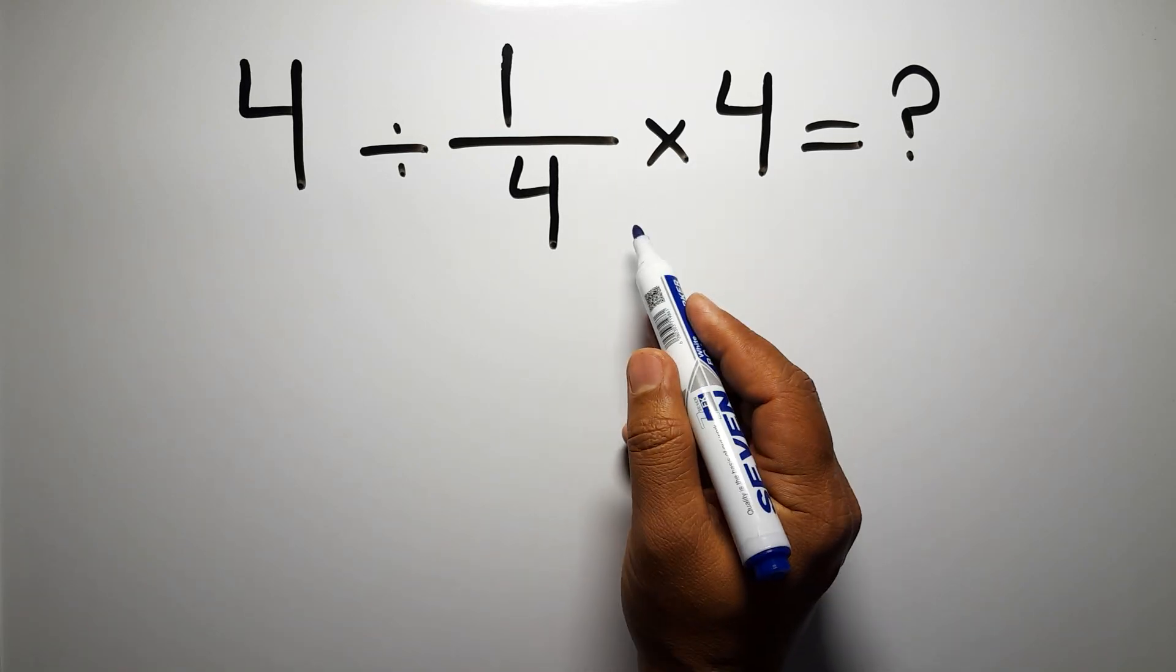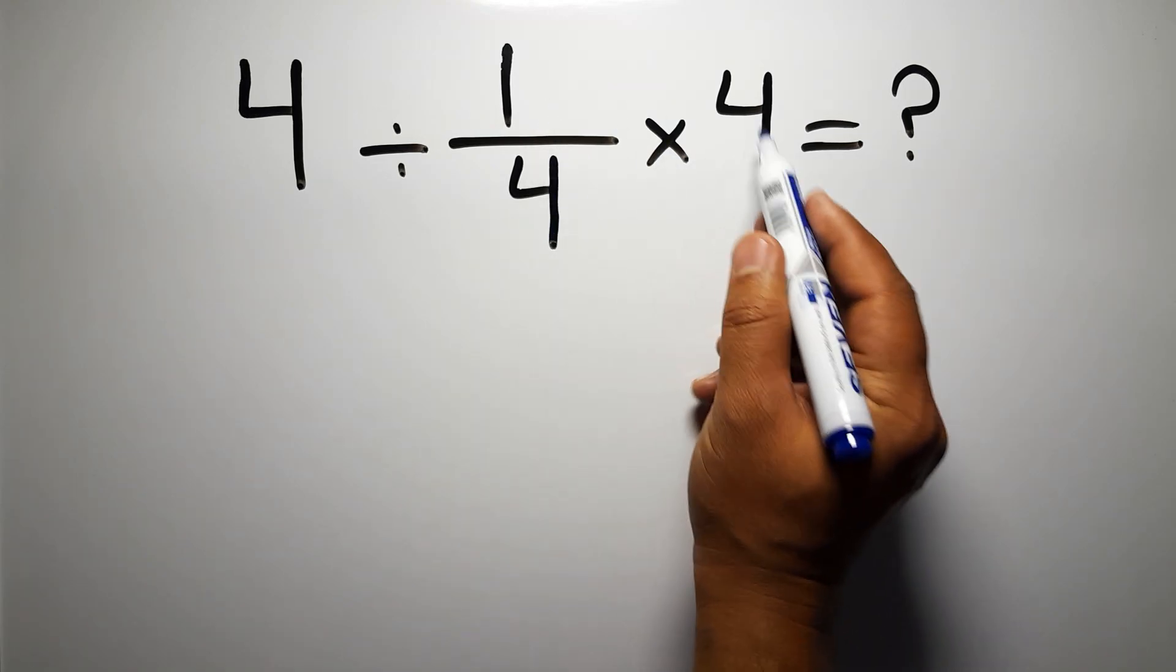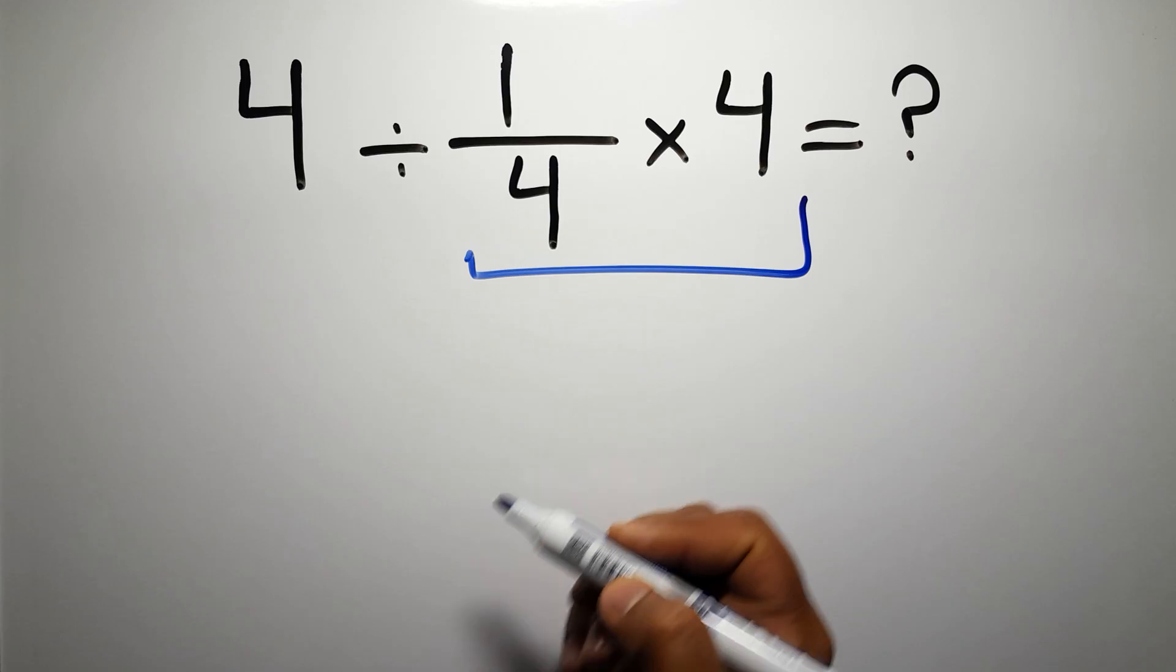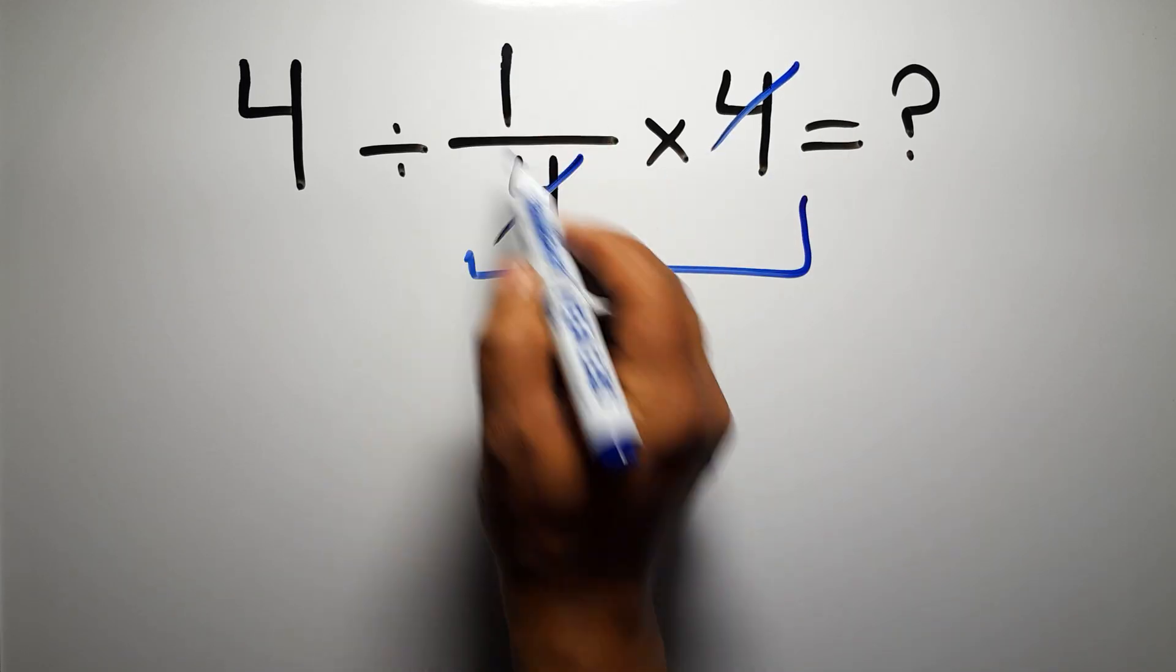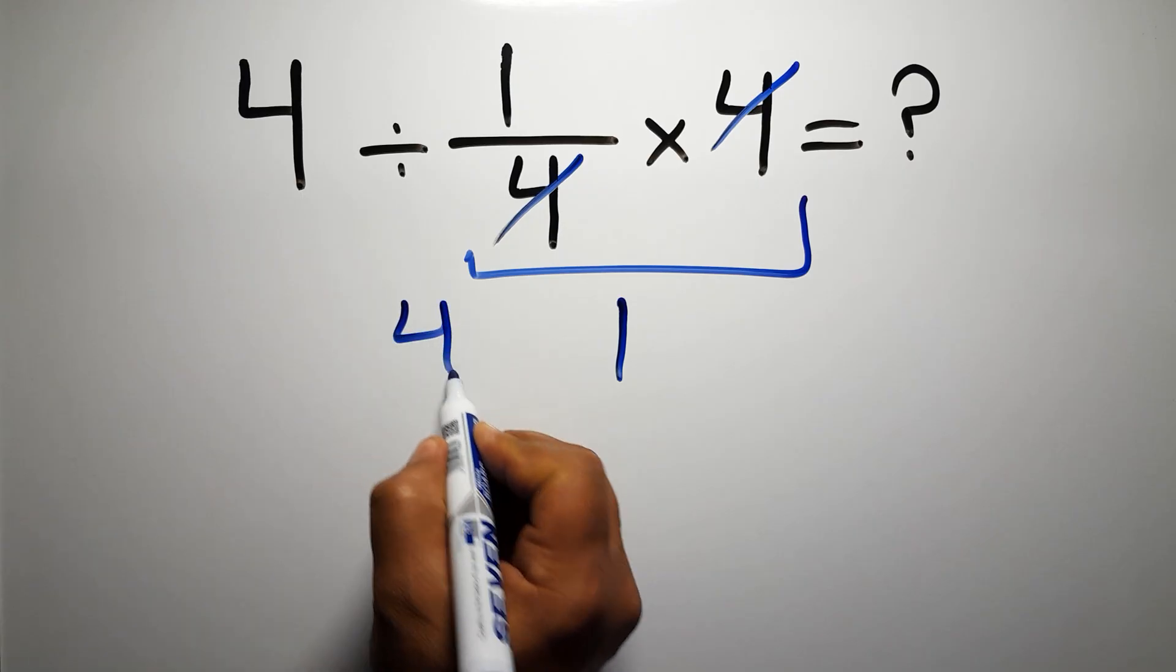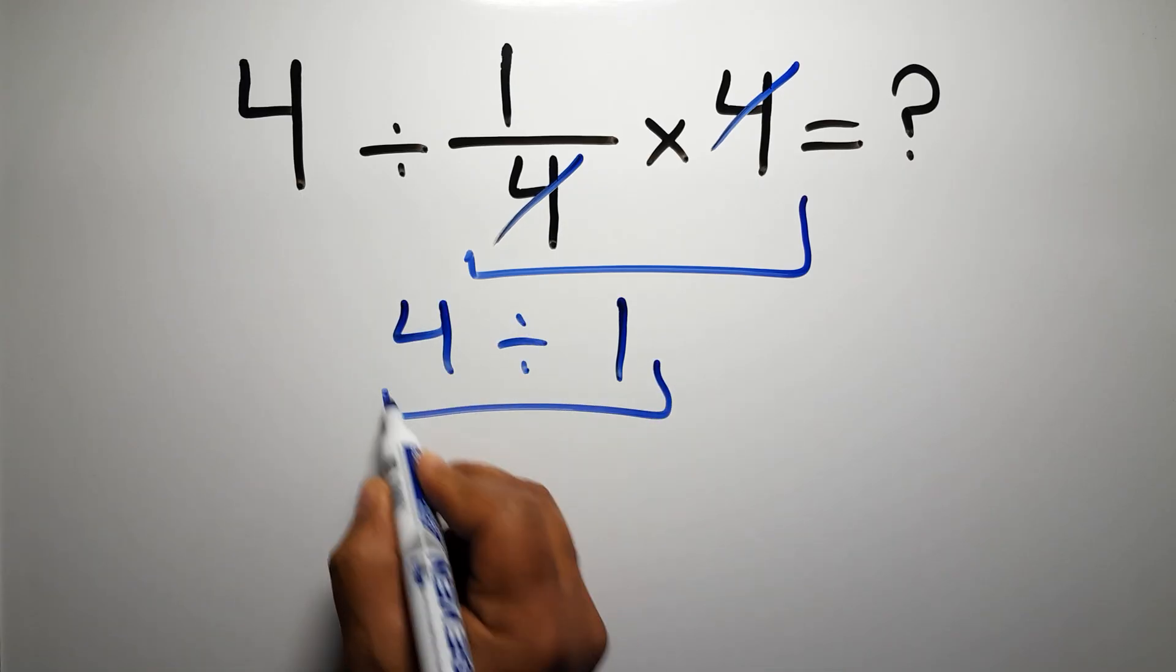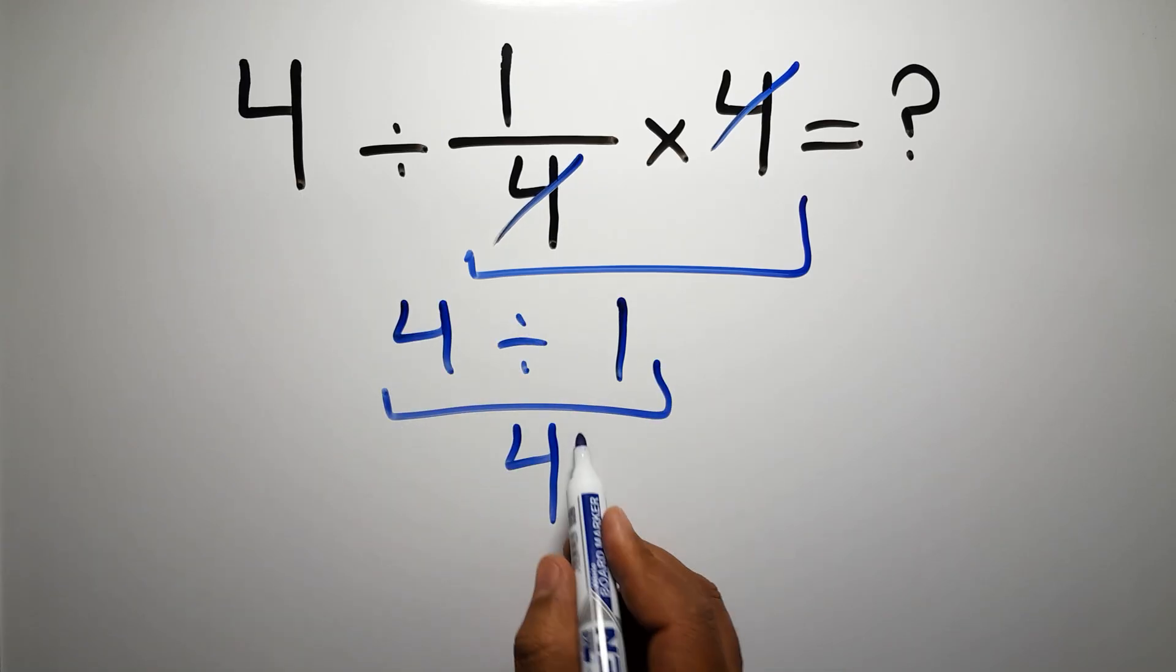First, we do this multiplication: 1/4 times 4. We can easily cancel this 4 and this 4, so we have just 1, and 4 divided by 1 gives us 4. But this answer is not correct.